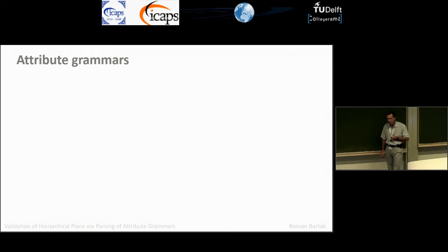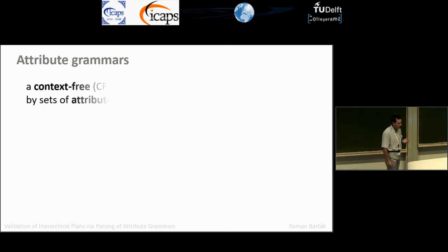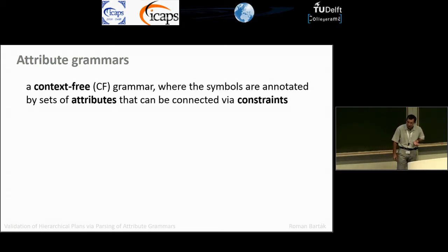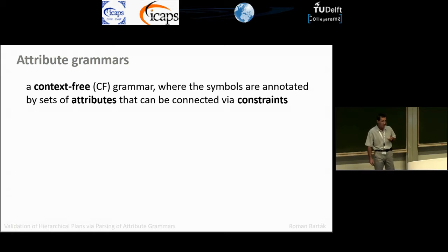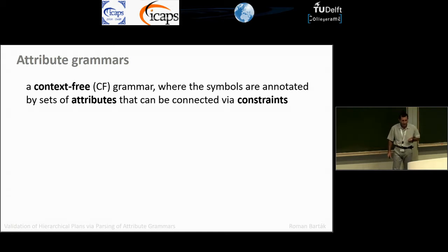We use the concept of attribute grammars. You probably know from undergraduate courses the notion of context-free grammar, which is very nice and simple. An attribute grammar is an extension of context-free grammar based on adding attributes to symbols — non-terminals and terminals. These attributes can be used to communicate information between different branches of the decomposition, and they may be connected or restricted by additional constraints.